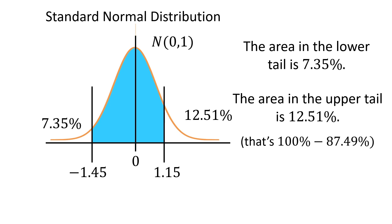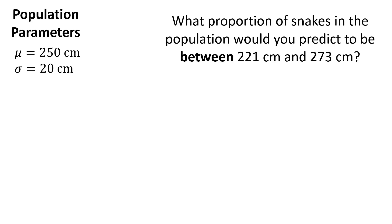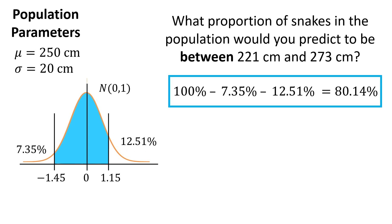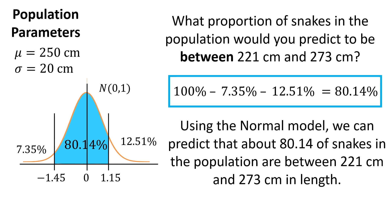Now we can figure out the area between the two bounds. The proportion of snakes between 221 and 273 centimeters is 100% minus the lower tail minus the upper tail: 100% minus 7.35% minus 12.51%, giving us 80.14%. So about 80% of the population of snakes, according to this model, will have lengths between 221 and 273 centimeters.